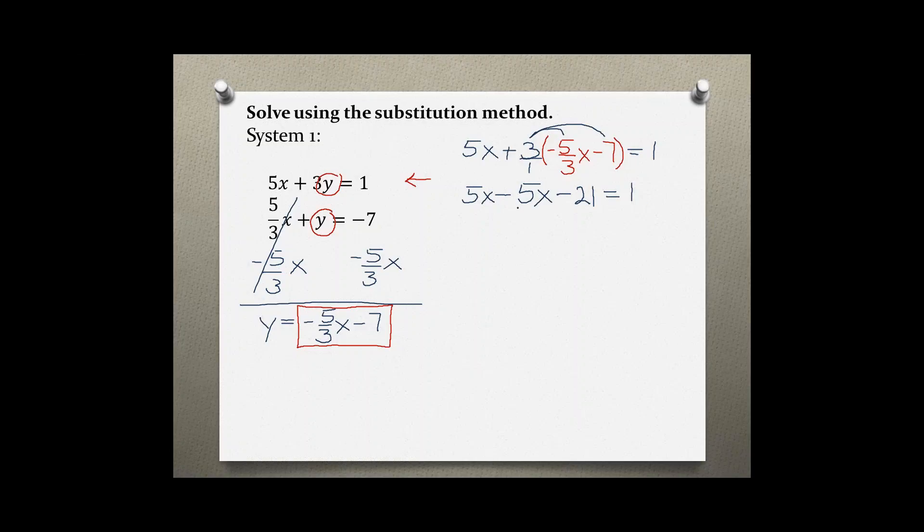Now 5x minus 5x is 0, and we are left with negative 21 is equal to 1. That is not a true statement because negative 21 is not equal to 1. Therefore, this system has no solution.